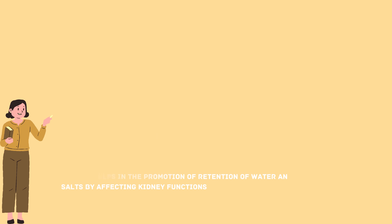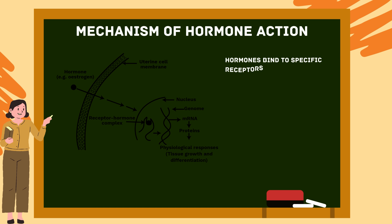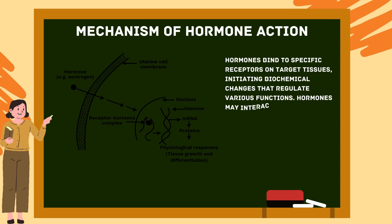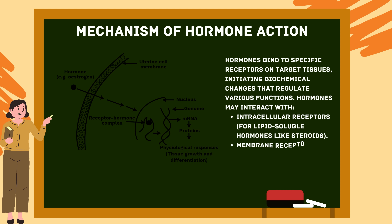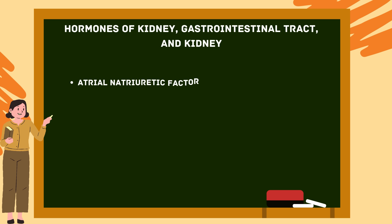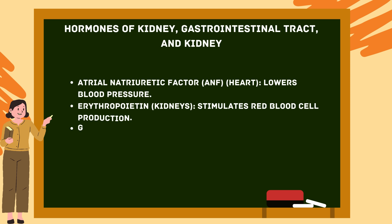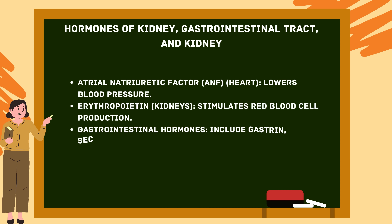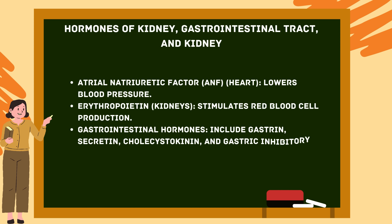Mechanism of hormone action: Hormones bind to specific receptors on target tissues, initiating biochemical changes that regulate various functions. Hormones may interact with intracellular receptors for lipid-soluble hormones like steroids, or membrane receptors for water-soluble hormones like peptides. Other hormones include: atrial natriuretic factor (ANF) from the heart, which lowers blood pressure; erythropoietin from the kidneys, which stimulates red blood cell production; and gastrointestinal hormones such as gastrin, secretin, cholecystokinin, and gastric inhibitory peptides, which regulate digestion.